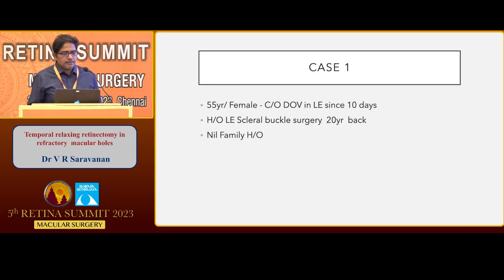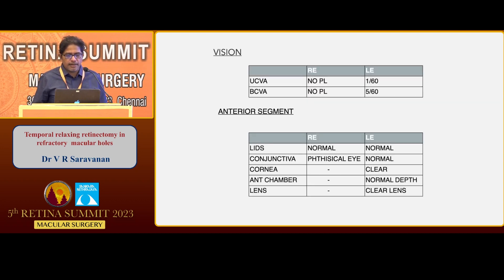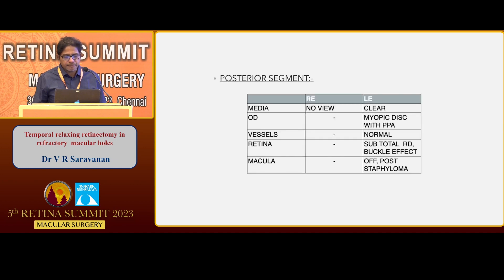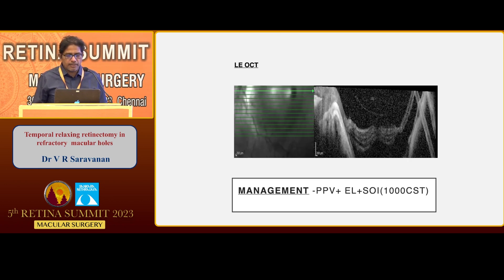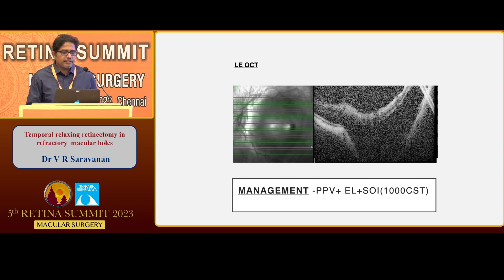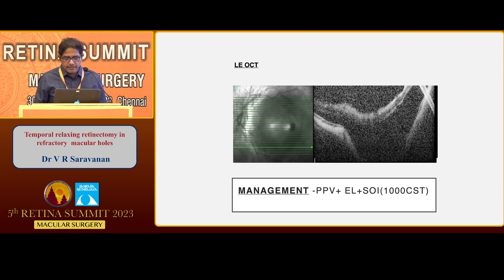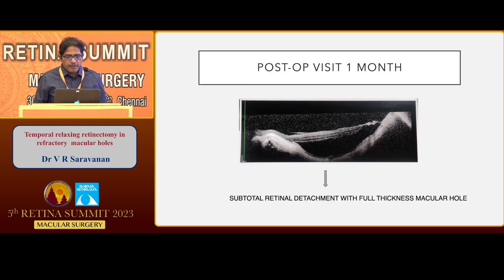Just presenting two cases. This is a one-eyed lady who had already undergone scleral buckling surgery 20 years back. The other eye she's lost because of old RD and phthisis. She developed a recurrent RD and underwent primary retinectomy for the detachment. She had a macular hole also — this is the preoperative OCT. After the vitrectomy, you can see the staphyloma, the large detachment, and the macular hole is not closed. There's a recurrent retinal detachment in spite of oil being inside, and there is some thinning at the edge of the staphyloma also.